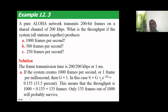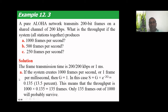The throughput for Pure ALOHA is given by S = G × e^(−2G). With G equal to 1, this becomes S = 1 × e^(−2), and the value of e^(−2) is 0.135, meaning 13.5% throughput.